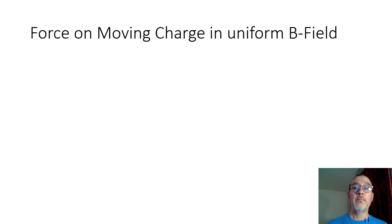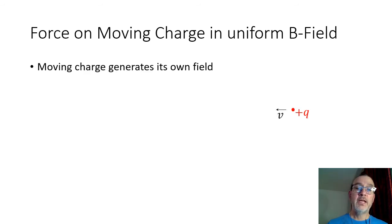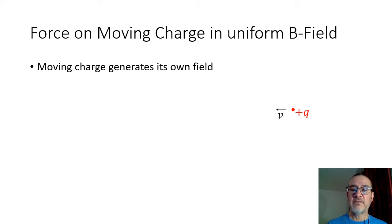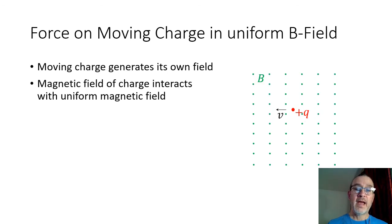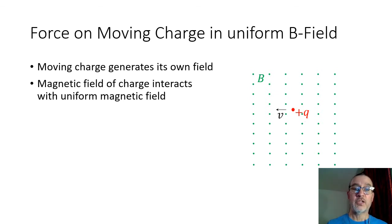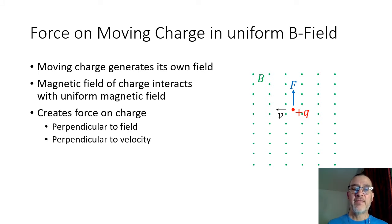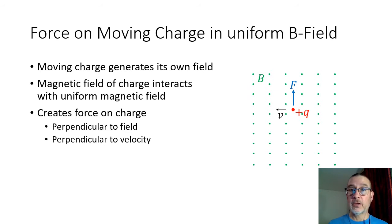The next thing we're going to introduce is the force on a moving charge in a uniform magnetic field. It turns out that a moving charge will generate its own field, just like the current generates a field in circles — that moving charge is also generating a magnetic field in some sort of circular pattern. So here I've got a positive charge +q moving to the left with a certain velocity v. If we put a magnetic field, we're going to have an interaction between the two magnetic fields, and that's going to create a force on the charge that is perpendicular to both the magnetic field and the velocity of the charge.